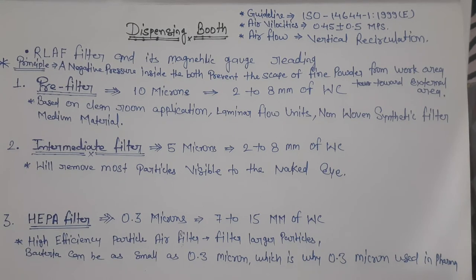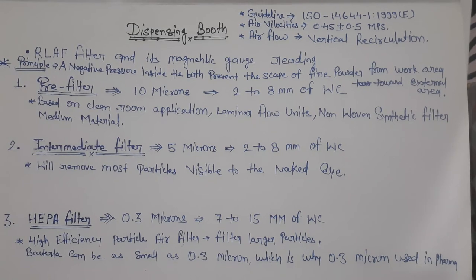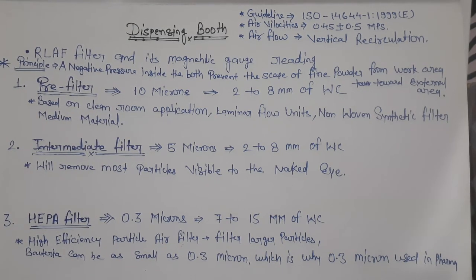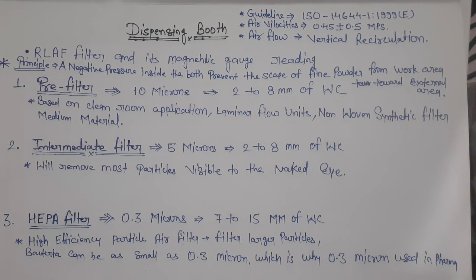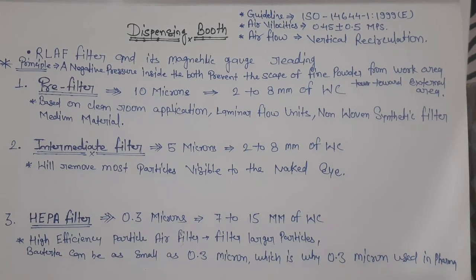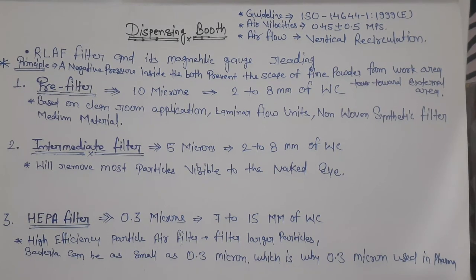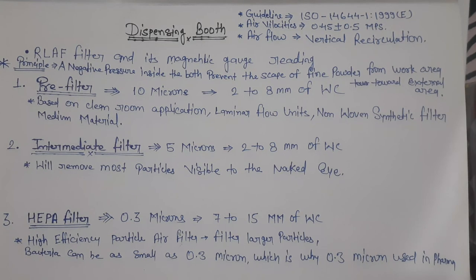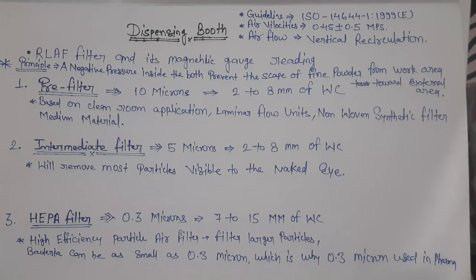The third one is HEPA filter. HEPA filter size is 0.3 microns and manometric gauge reading is 7-15 mm of water column. The full form of HEPA filter is High Efficiency Particulate Air filter. It filters larger particles — bacteria can be as small as 0.3 microns, which is why 0.3 microns is used in pharmaceutical industries in dispensing booths and other areas. Thank you, everyone.